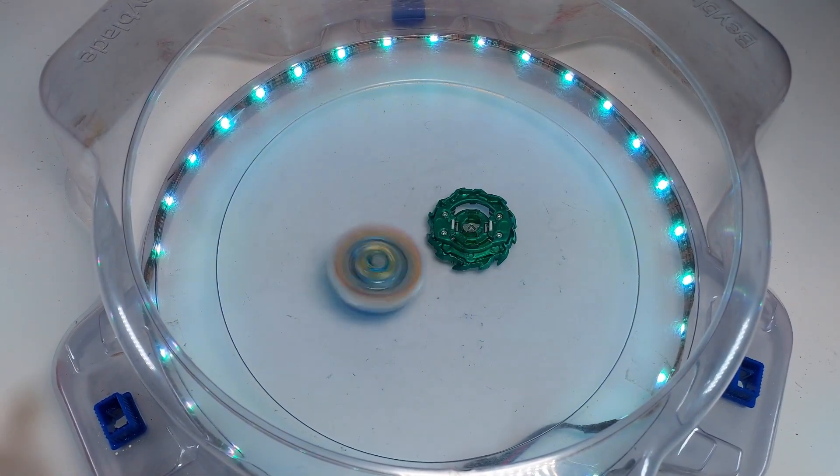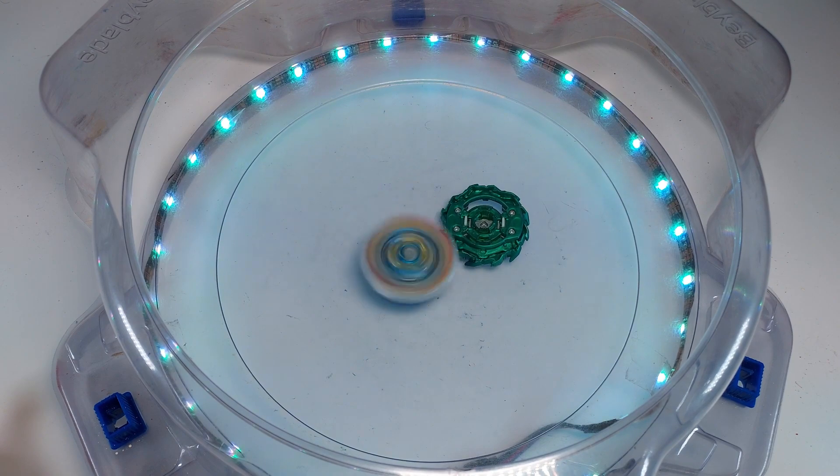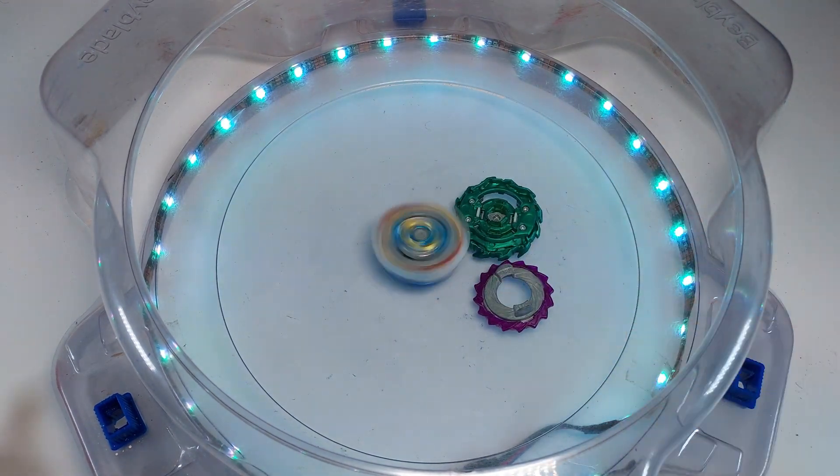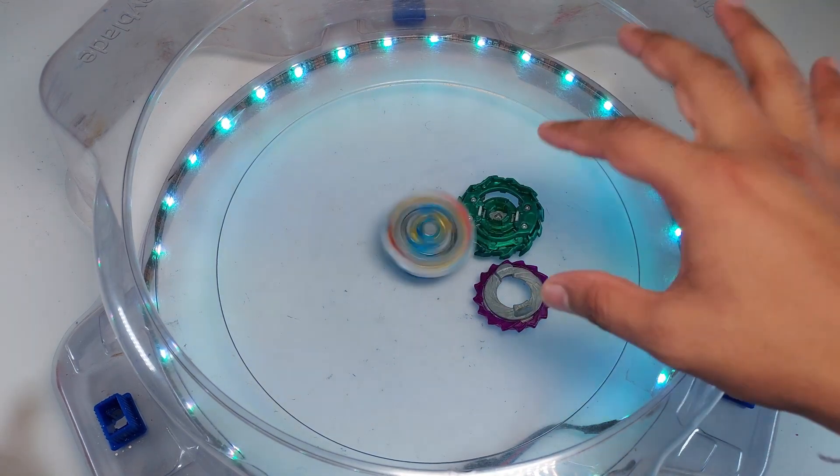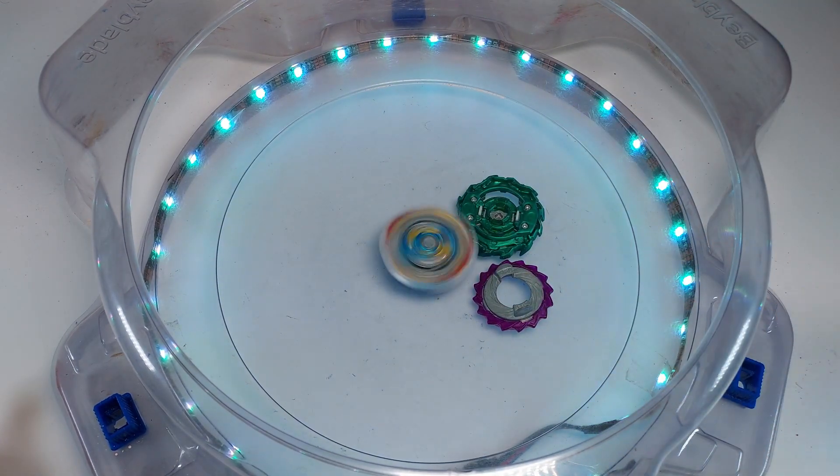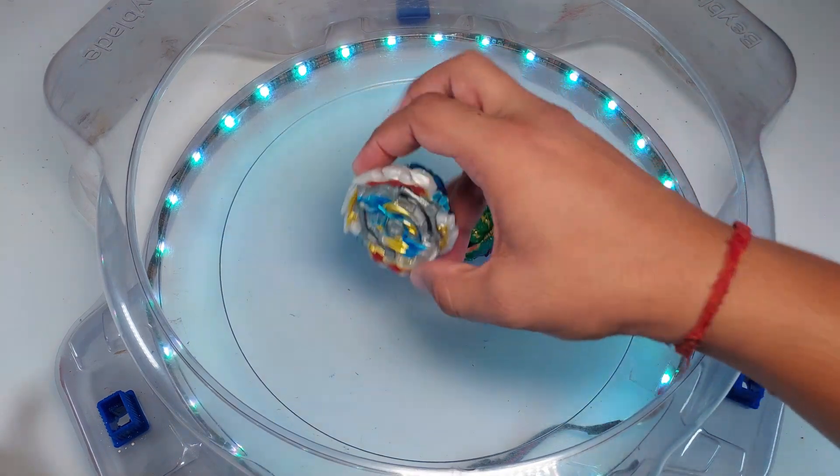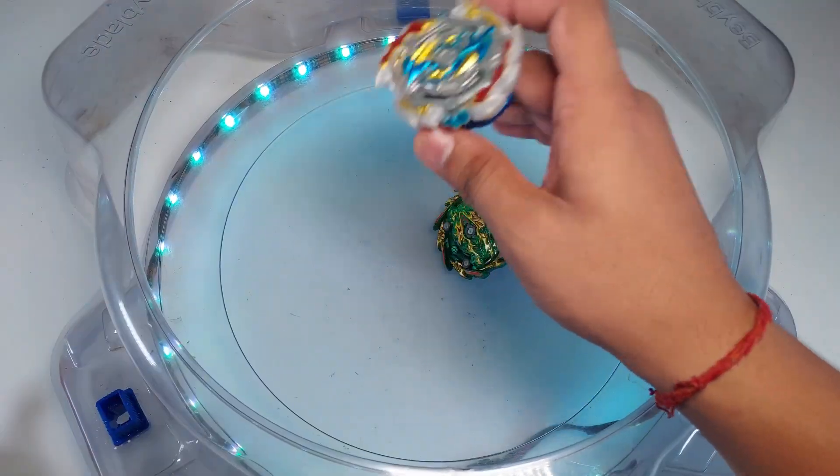It was not a burst - it went out and then it bursted, so it was a knockout. Ace Dragon gets its fourth point. That's four points to Ace Dragon, Ashura still at two. If Ace Dragon gets one more point, it's gonna be game over for Bushin Ashura.